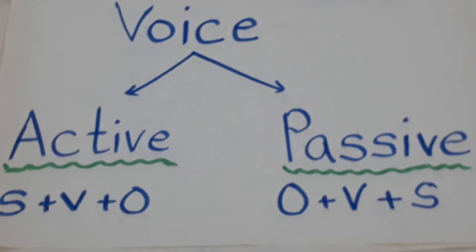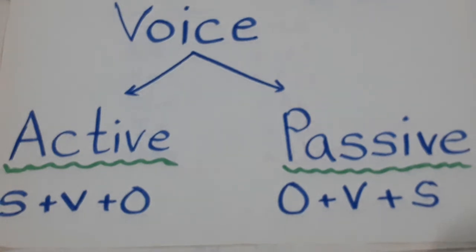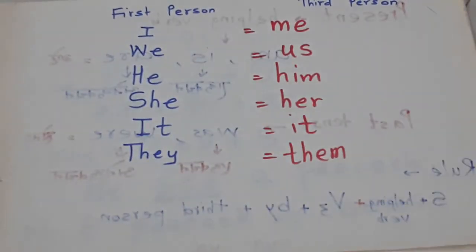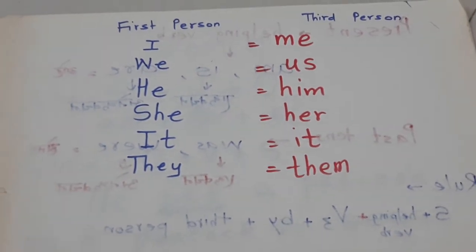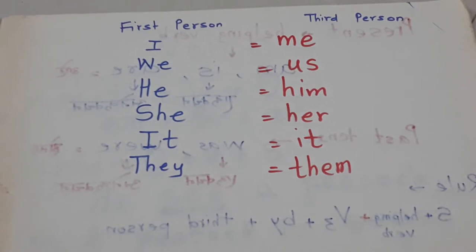First is active voice and second is passive voice. Active voice in Marathi we call kratari prayog, passive voice we call it karmani prayog. So before going to start, let's see the rules of active voice and passive voice.